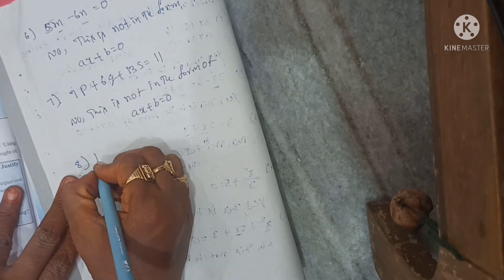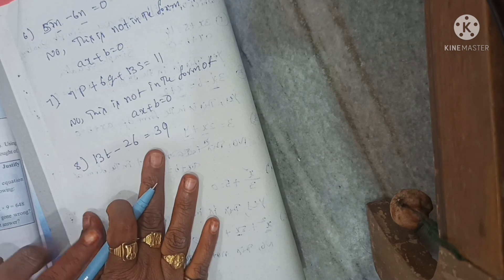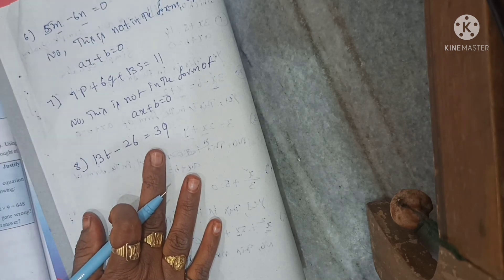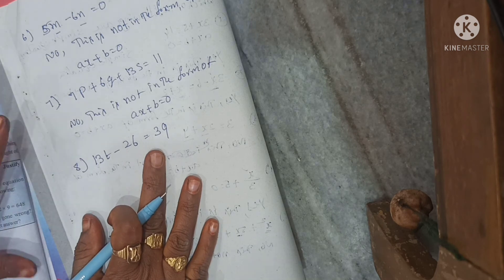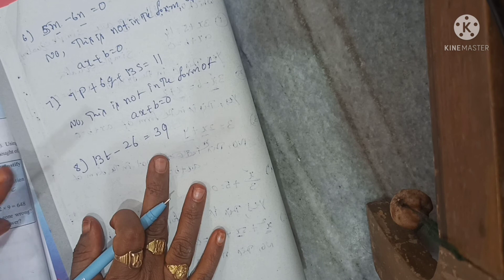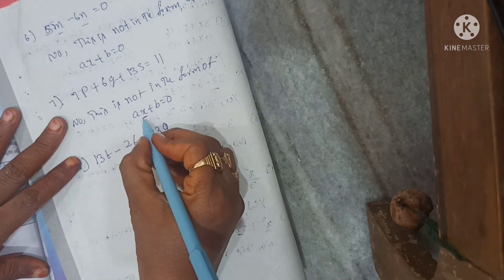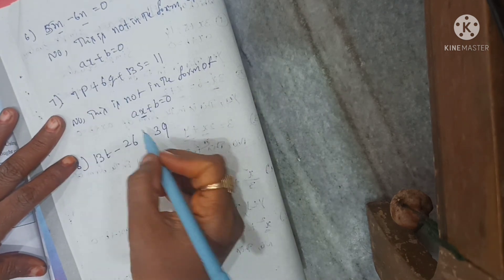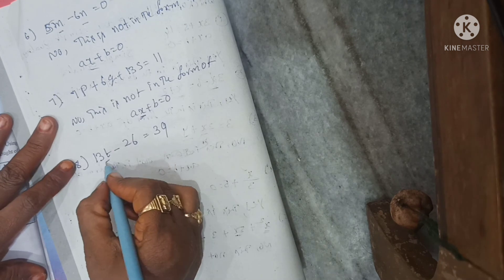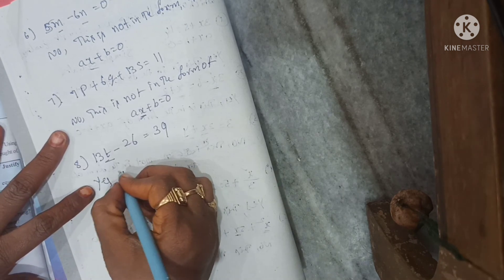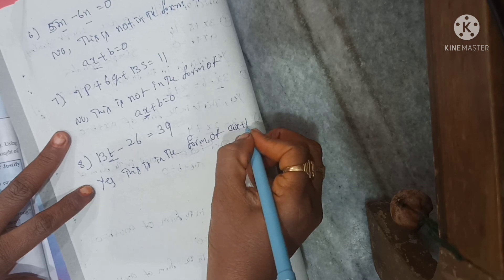Last one: 13T minus 26 is equal to 39. Here only one variable T is there. So yes, this is in the form of AX plus B is equal to 0.